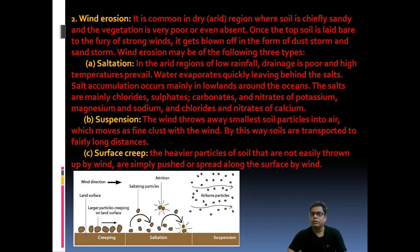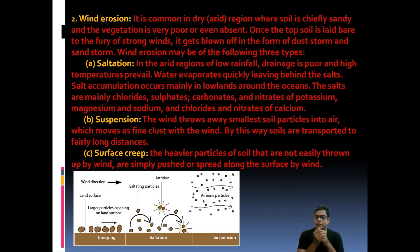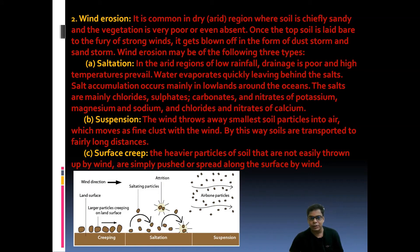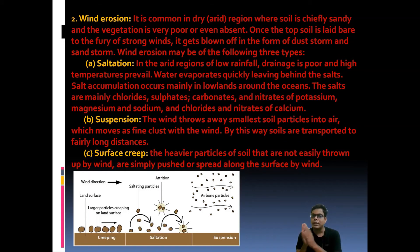Suspension means wind throws the smallest soil particles into the air, which move as fine dust with the wind. By this way, soils are transported to fairly long distances. In suspension, the smallest particles — millimeter or micro-millimeter sized sediments — can be transported from one area to another in desert regions, floating in the atmosphere as wind transfers them.